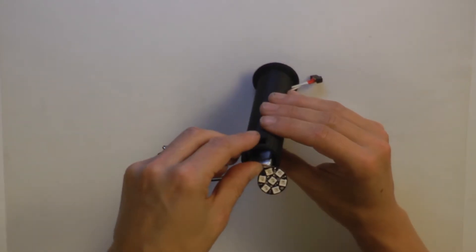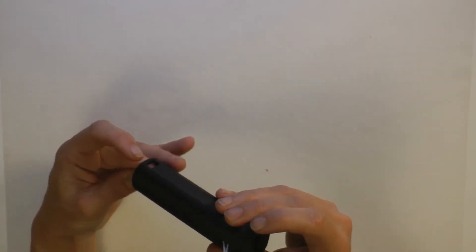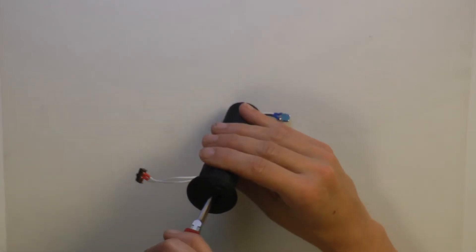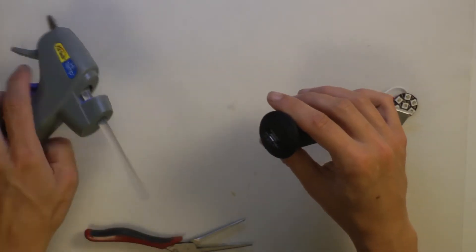Then, settle the Pro Trinket into the bottom hole and secure it with hot glue, being careful not to get any glue in the USB port.